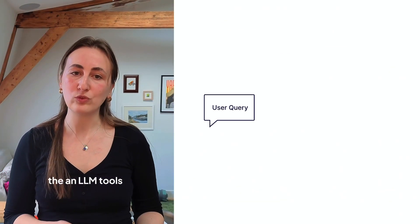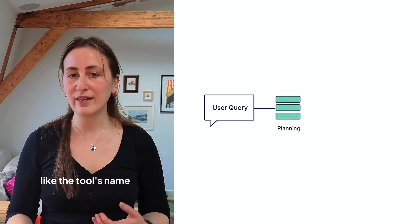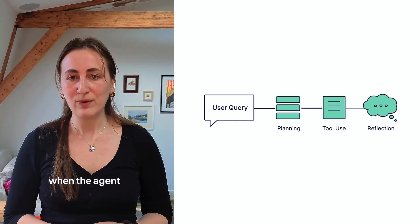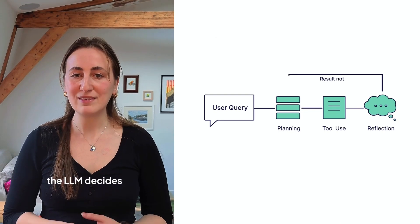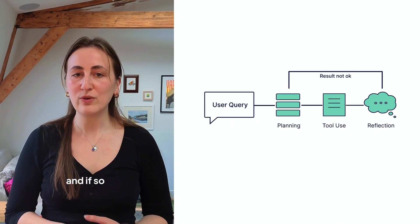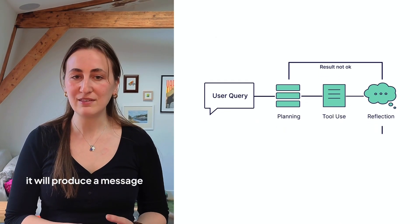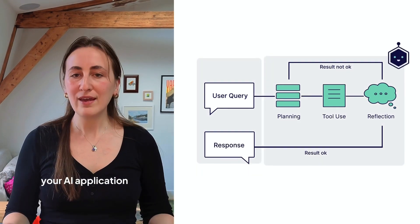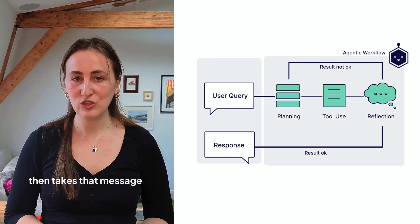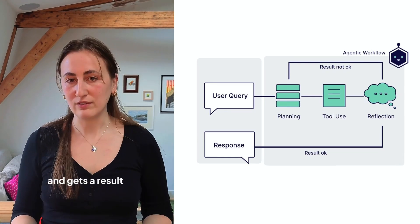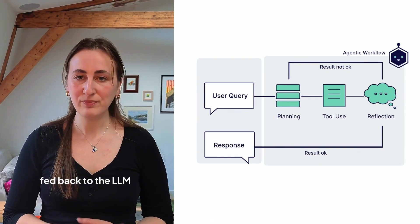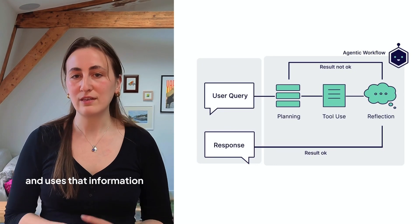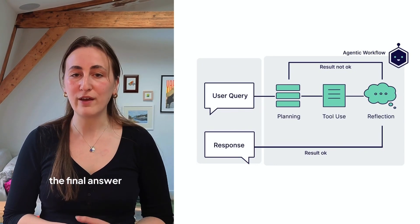When you give an LLM tools, you provide information like the tool's name, a crucial description of what it's useful for, and its expected inputs. When the agent receives a query, the LLM decides if a tool is needed, and if so, it will produce a message indicating which tool to use and the necessary inputs to run that tool. Your AI application then takes that message, runs the external tool, and gets a result, which is then fed back to the LLM.